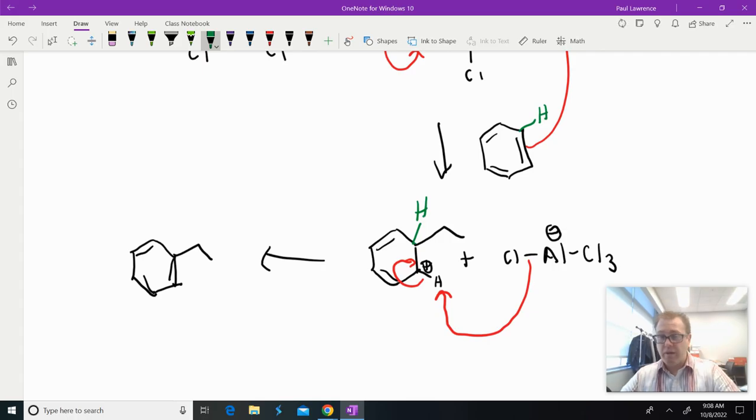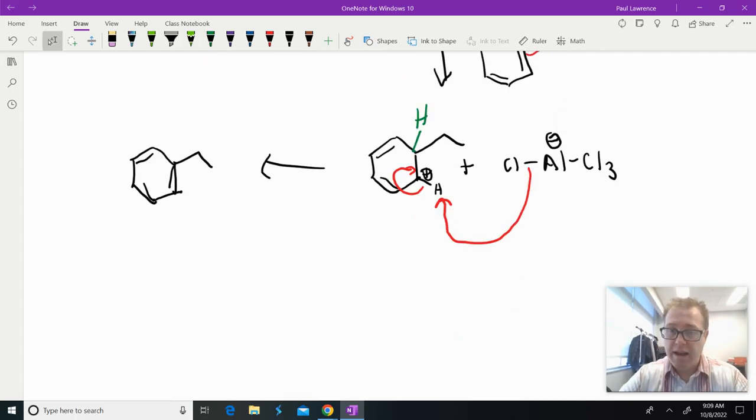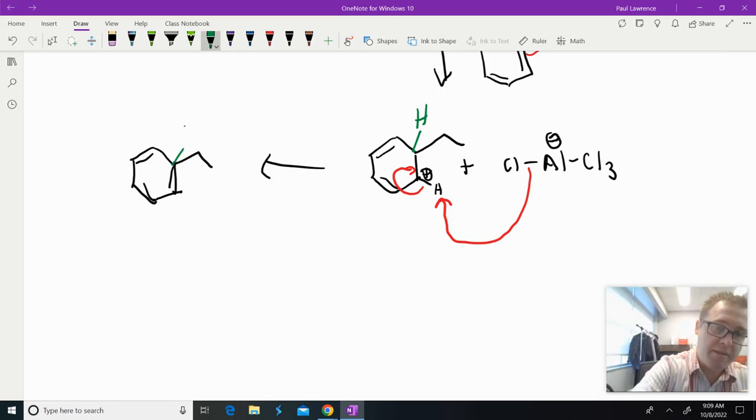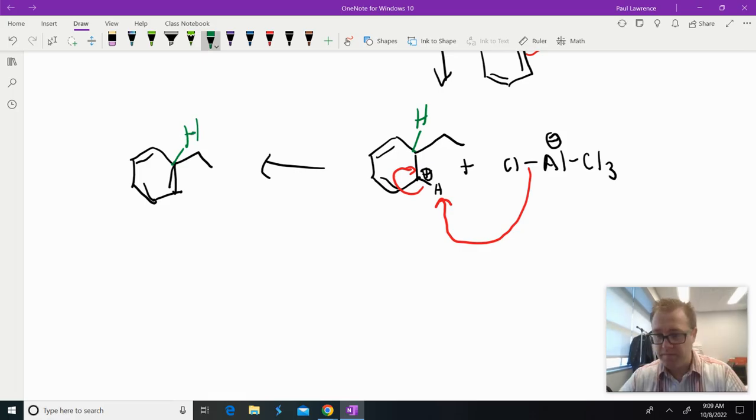So if you follow the red arrows and I rip off this hydrogen here, what does my product actually look like? Well, I still have that green hydrogen right there. What did I just form? I just formed a Texas carbon. Shame, shame, shame on me.